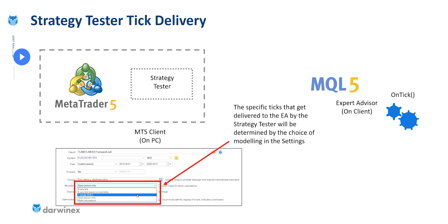I've been through these before in previous episodes. If you choose the 1 minute OHLC setting, this will deliver the four most important ticks from every minute — that being the open, the high, the low, and the close ticks.